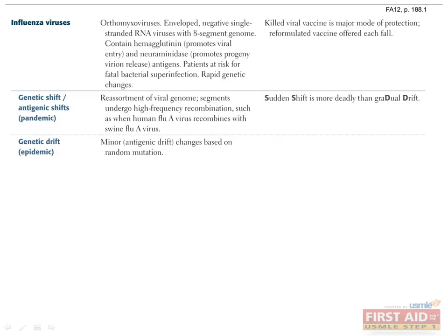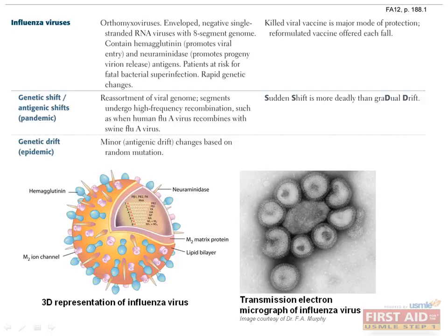Influenza virus is an RNA virus with a segmented genome that can undergo genetic reassortment, resulting in genetic shifts. Random mutations in the genome create genetic drifts, which result in epidemics. The influenza virus contains two types of glycoproteins on its outside surface: hemagglutinin and neuraminidase. Hemagglutinin proteins allow the virus to attach to and enter cells by binding to sialic acid sugars on respiratory epithelial cells. Neuraminidase is an enzyme that allows the virus to exit the cell by cleaving the sugars bound to mature viral particles, and is an important target for the antiviral drugs oseltamivir (Tamiflu) and zanamivir.